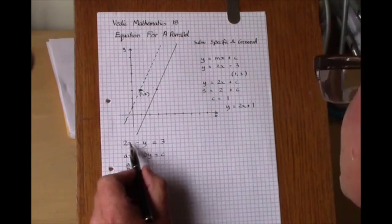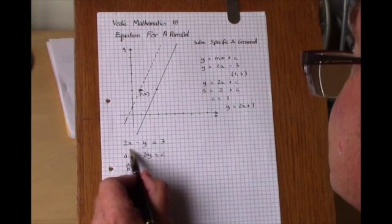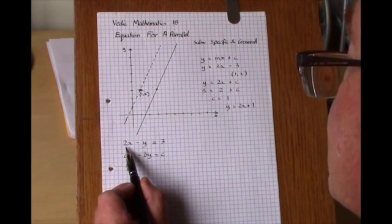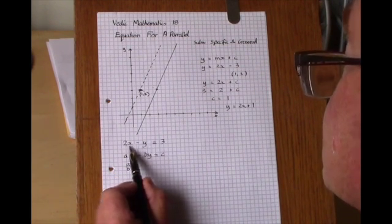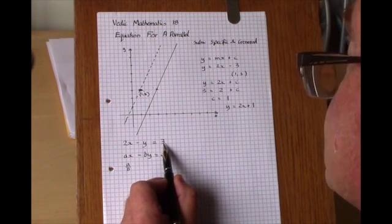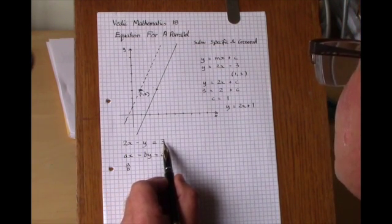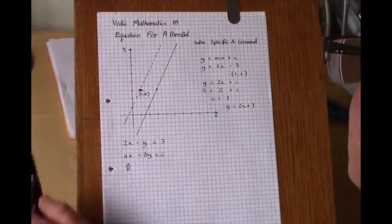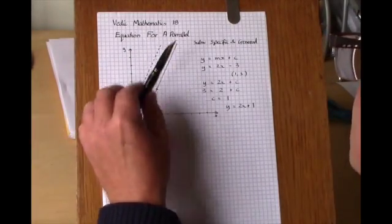So this left hand side of the equation tells you about the gradient of the line, and the right hand side tells you about the position of that line, any line parallel to this one.